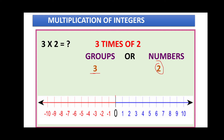We have three groups and two numbers. Starting from zero: zero to one, one to two — two numbers, which makes one group. Then from two to three and three to four, that makes the second group. Two numbers make one more group — that is the second group.